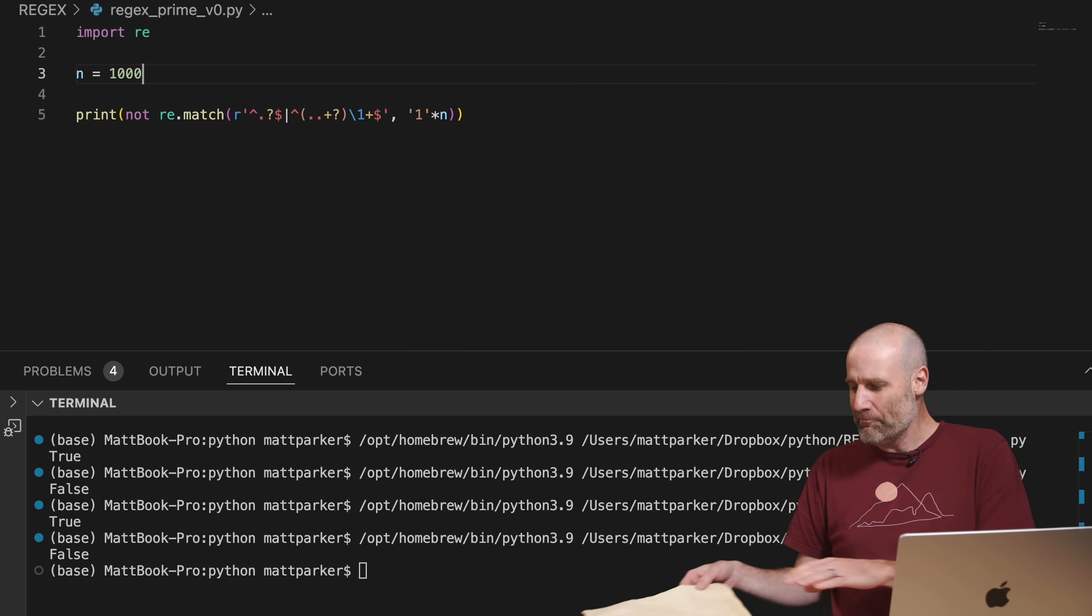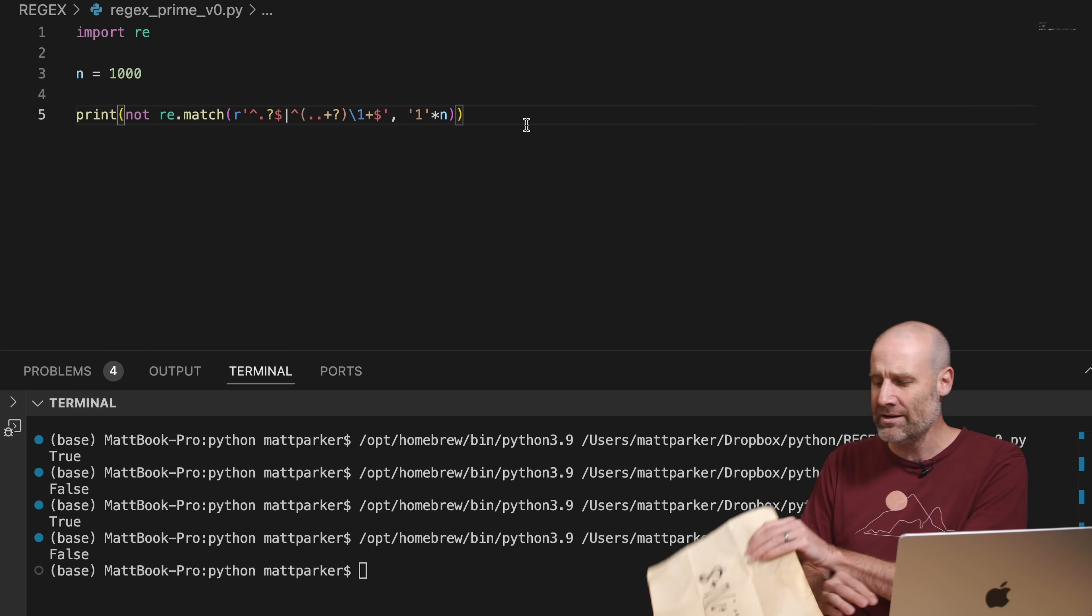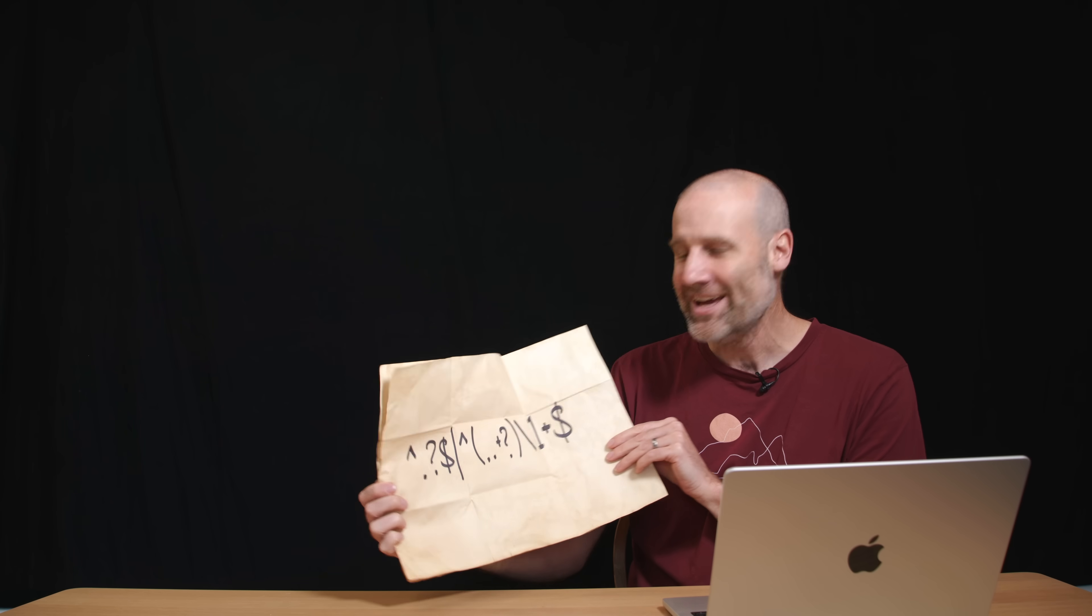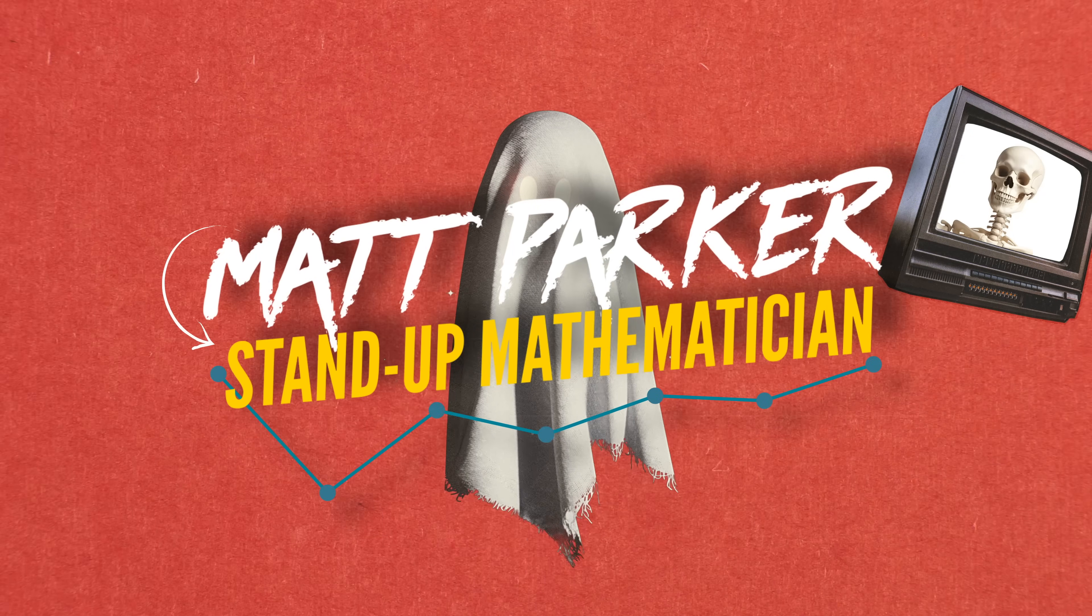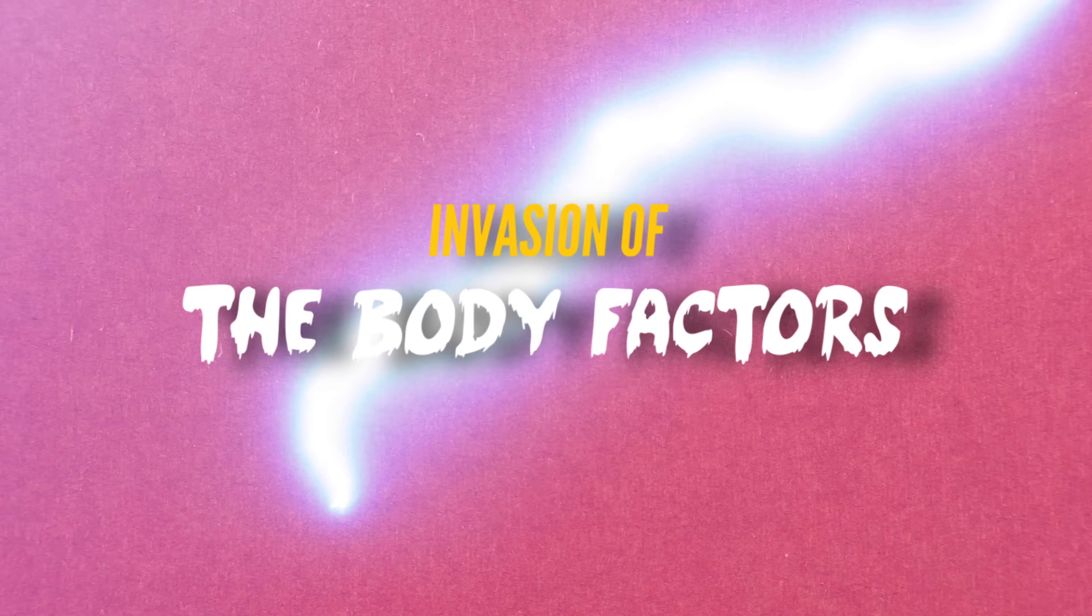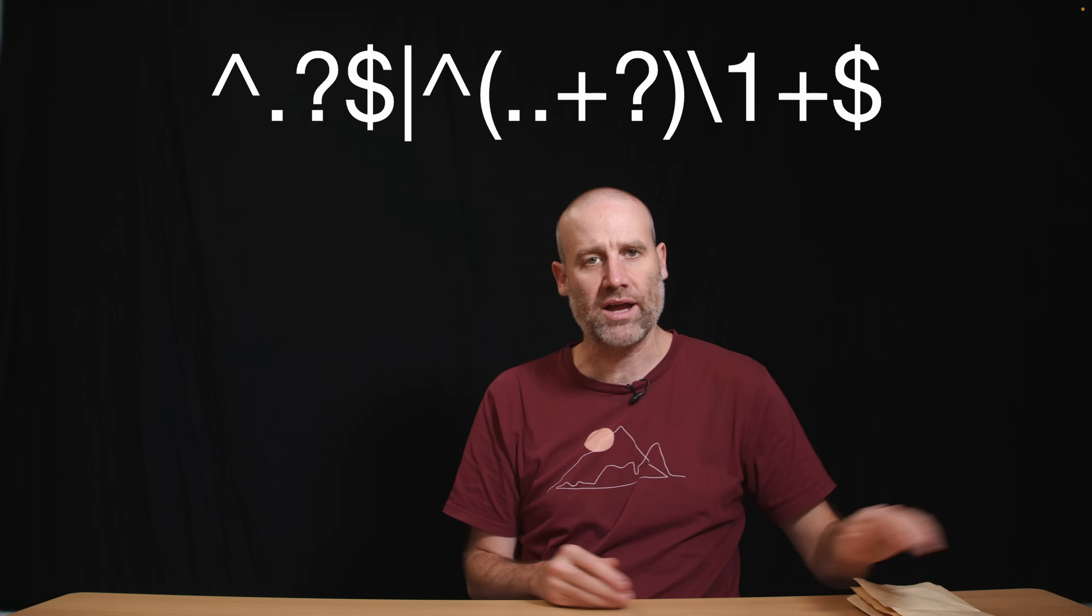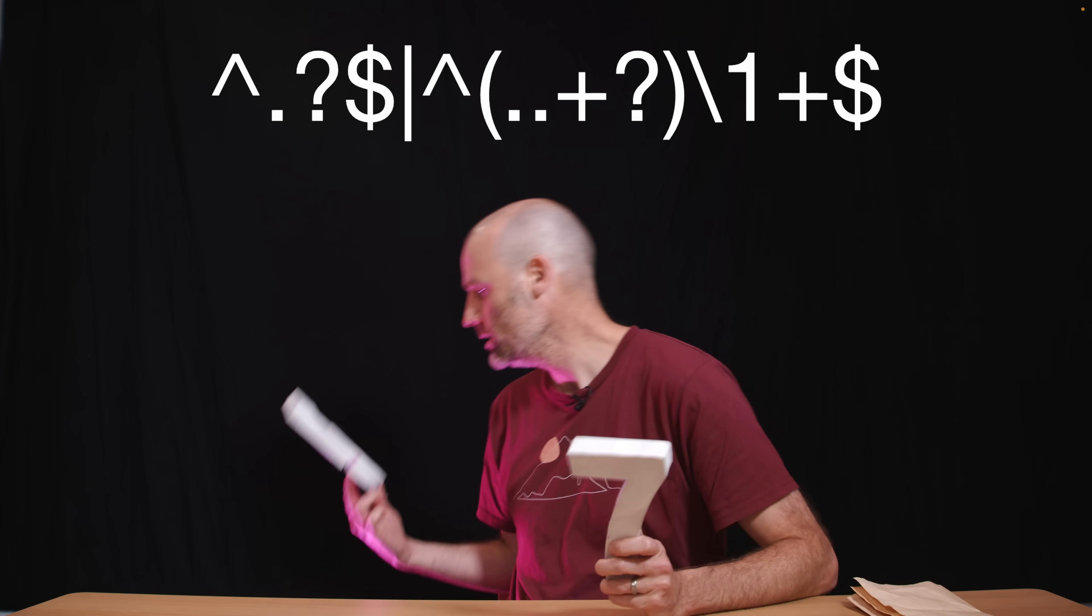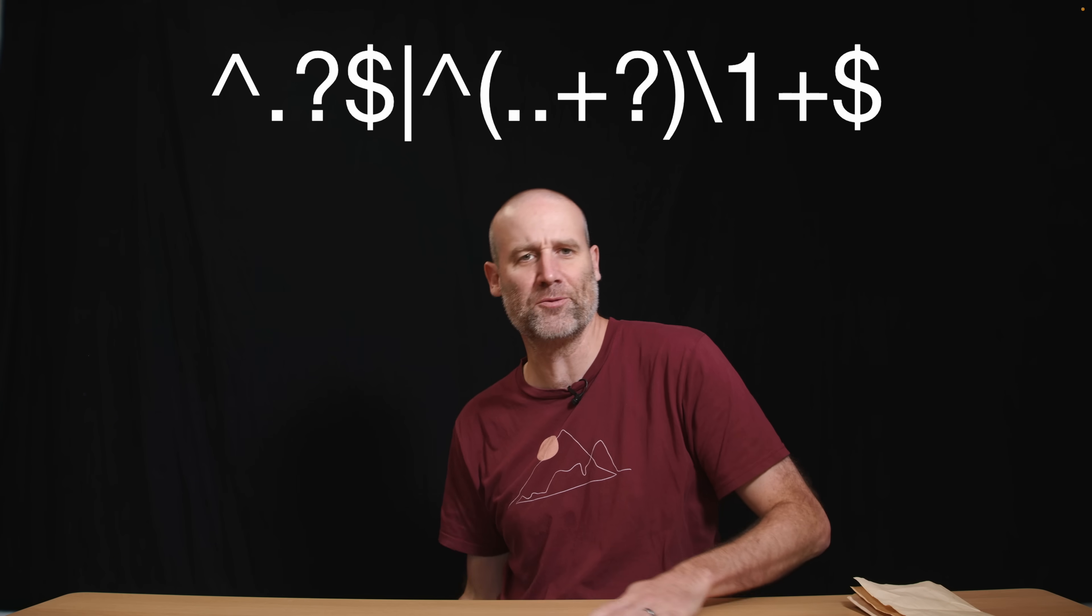And it does that by matching the number, or rather the number times the character one against this regular expression. So to understand how on earth this can tell if a number is prime or not, we need to understand all of these symbols. We are not going to go through every single bit of this expression at once. Instead we're going to do it a little bit at a time.